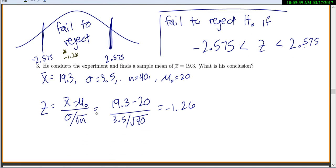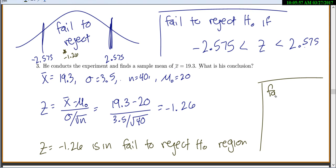So it's in the fail to reject region. So z equals negative 1.26 is in the fail to reject the null hypothesis region. So our final conclusion is that we will fail to reject the null hypothesis.